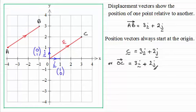It's important to note that the coordinates of point C are exactly the same as the coefficients of i and j. In other words, the x-coordinate is 3 and the y-coordinate is 2.